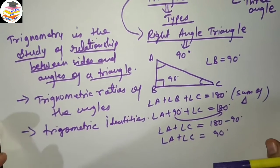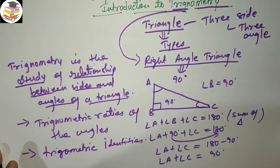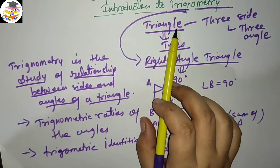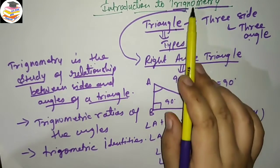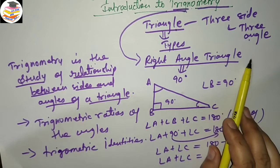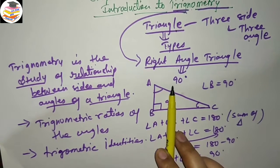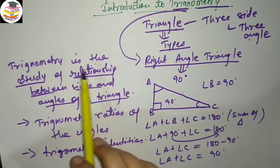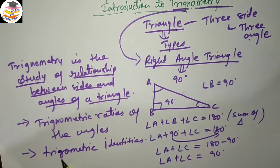I don't have much time today, but I wanted to upload a video. So to summarize: trigonometry is about triangles — three sides and three angles. Our trigonometry applies specifically to the right angle triangle, which has one 90-degree angle, and the other two angles sum to 90 degrees. Trigonometry is the relationship between sides and angles. Next, we will study trigonometric ratios and then trigonometric identities.